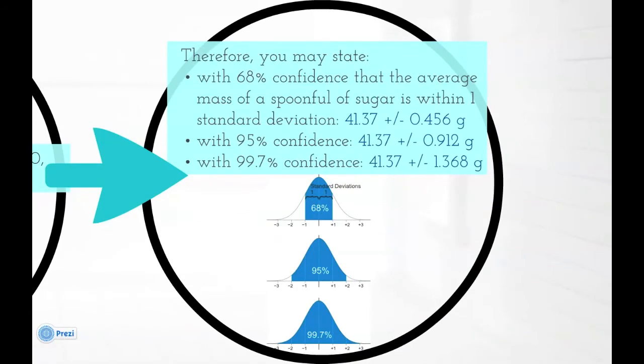Therefore, you may state with 68% confidence that the average mass of a spoonful of sugar is within one standard deviation of the mean, with 95% confidence that it is within two standard deviations of the mean, and with 99.7% confidence that it is within three standard deviations of the mean.